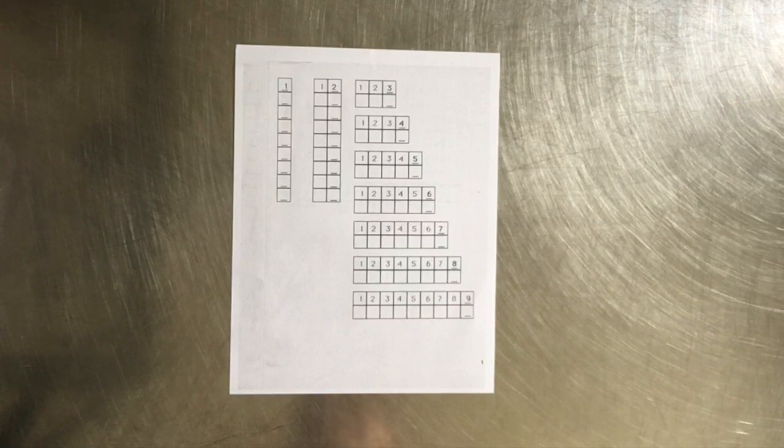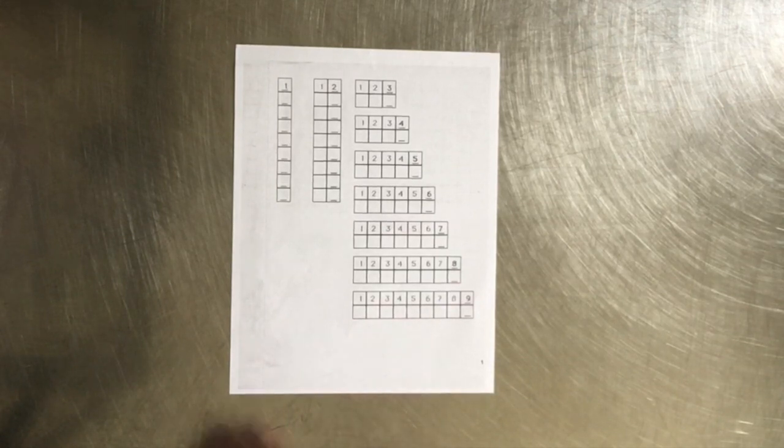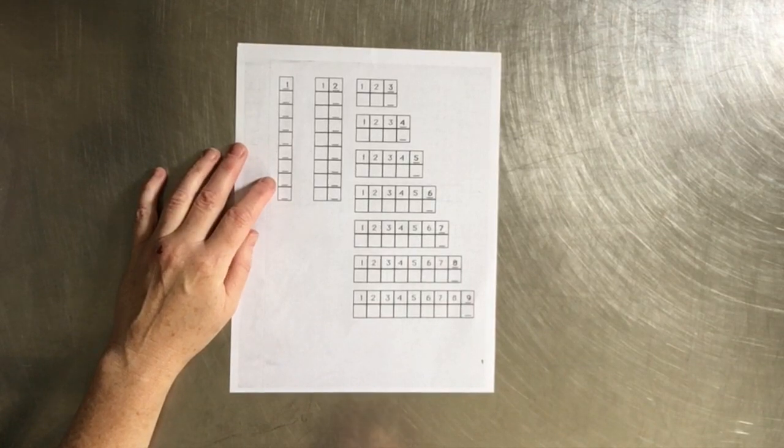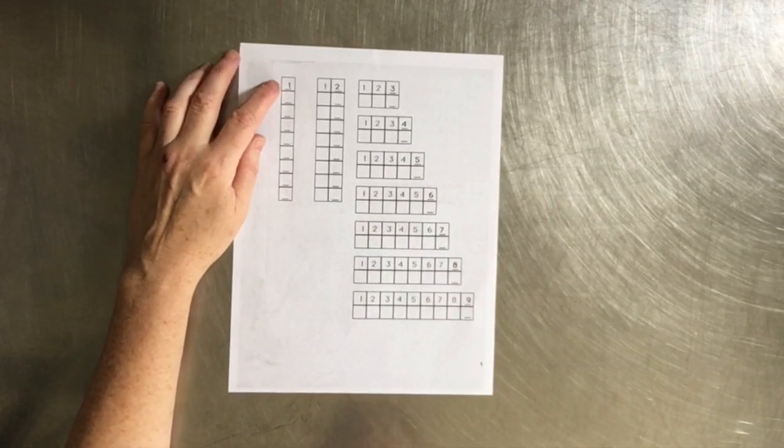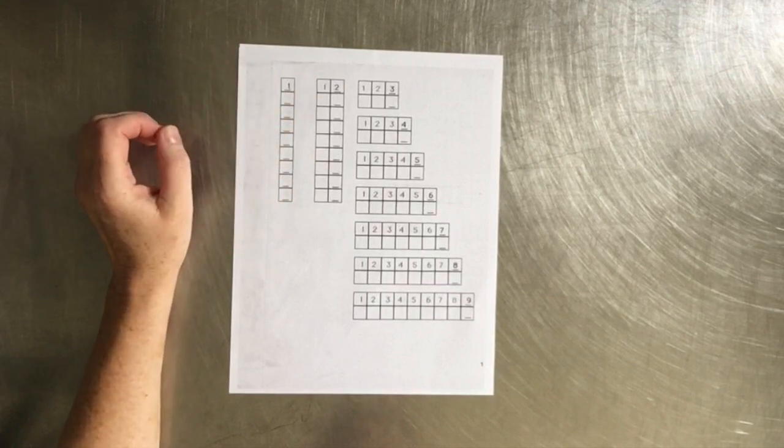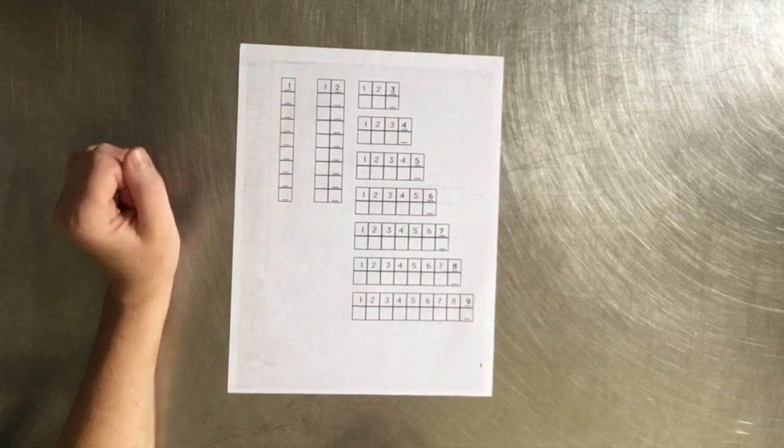The way we are going to approach it is basically we are going to start in the concrete, move to the representational and then finally into the abstract. On this page we have representational which is the drawing of the models and also we have the abstract which are the symbols. So the symbols that represent the drawings and that represent the models.